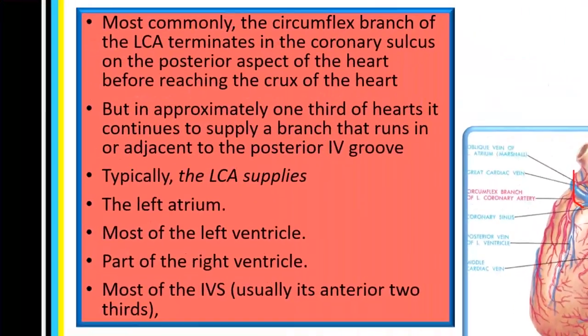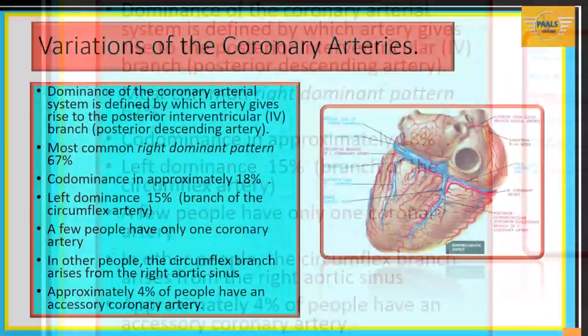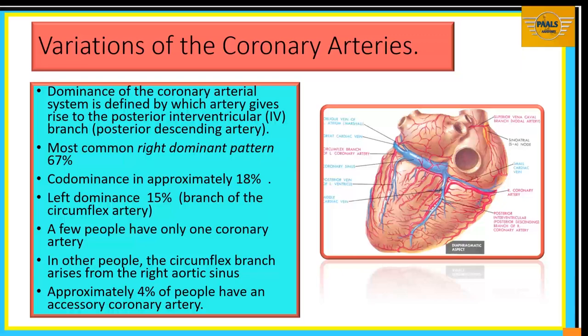Typically, the left coronary artery will supply the left atrium, the left ventricle, part of the right ventricle, and most of the interventricular septum — usually its anterior two-thirds. Recall that the right coronary artery supplies the posterior one-third.